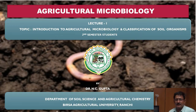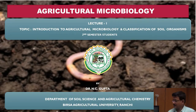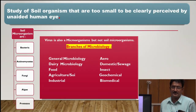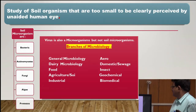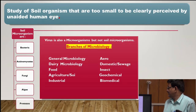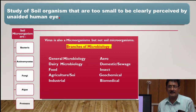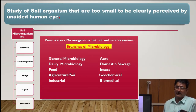Agriculture microbiology means that we deal with the study of soil organisms that are too small to be clearly seen by the naked human eye. These organisms are so small that we cannot see them with the naked eye.